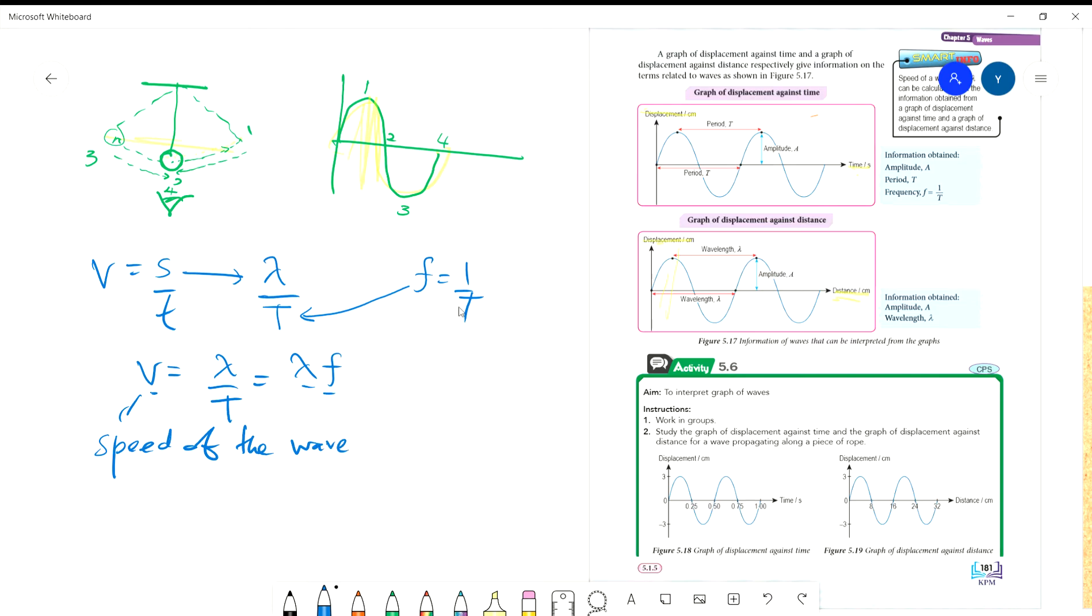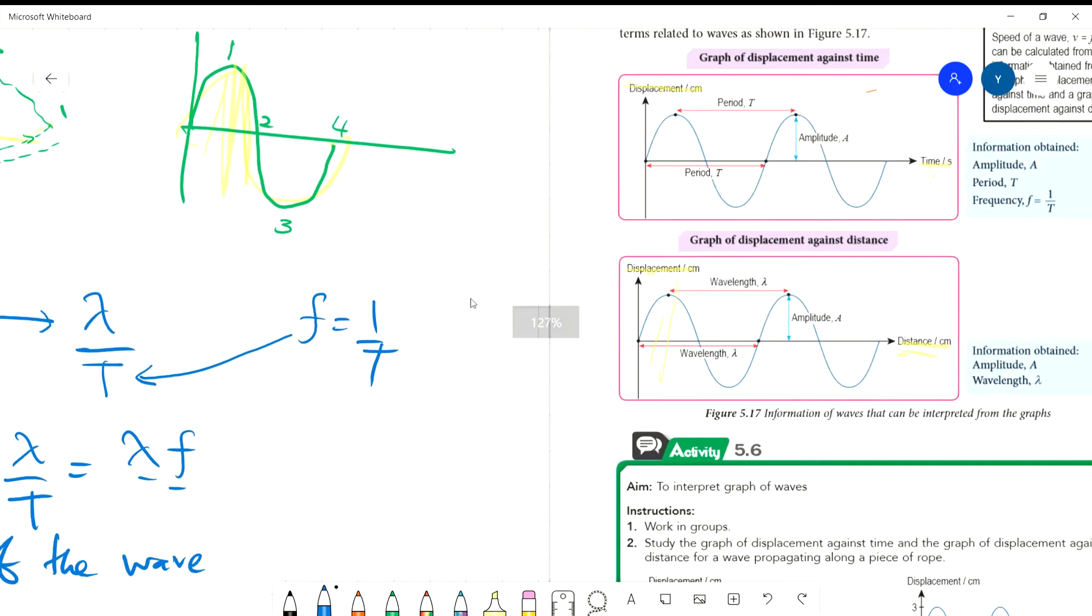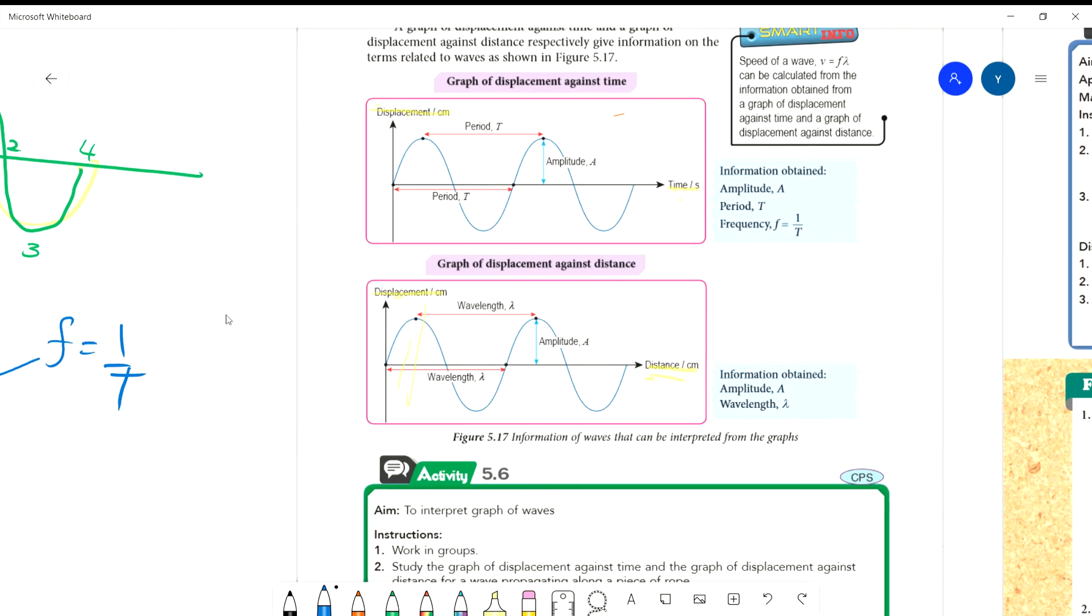Look at this graph. Make sure you read the graph title correctly - displacement against time. One complete cycle is here. Let's say at 10 seconds, it means the particle moves for 10 seconds and returns to its original position. This is positions 1, 2, 3, 4. This is the second cycle, so here is 20 seconds. You can take from here to here, or from here to here - it's the same.